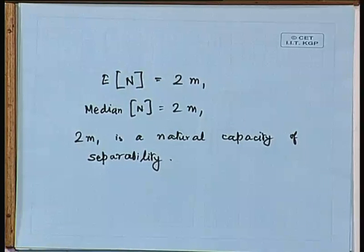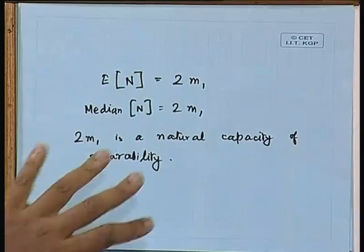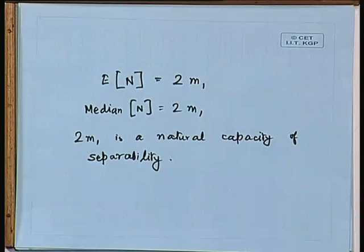In Cover's theorem we were considering separability from the standpoint of variation of M1 — showing that higher dimensional space results in better separability. Here, fixing M1, we calculate the capacity of separability in terms of the number of patterns, where 2*M1 becomes a good natural capacity of separability.